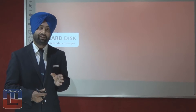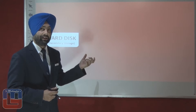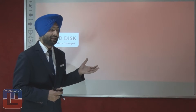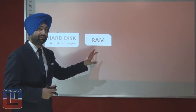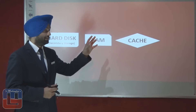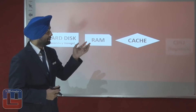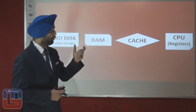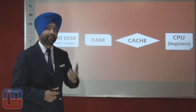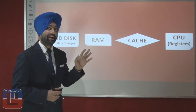Now we have a pictorial representation of the position of cache memory. We will learn where the cache memory is located. First of all we have the hard disk — the secondary storage — followed by the RAM, the primary storage. Then we have the cache, which is located just after the main memory or RAM. After cache we have the CPU, the central processing unit. So the cache is located in between the RAM and the CPU.